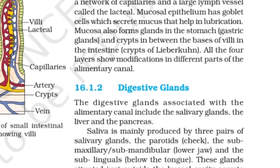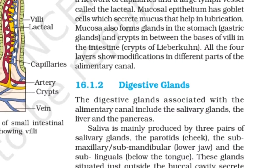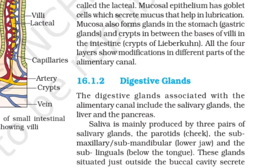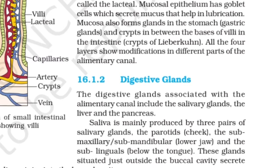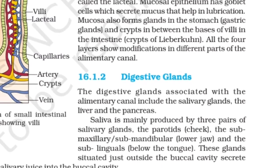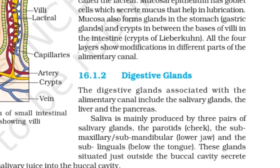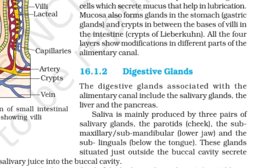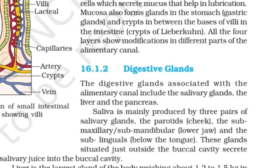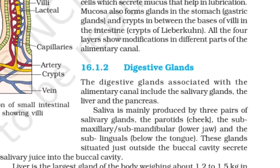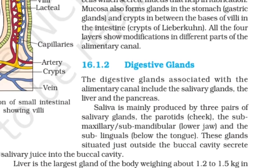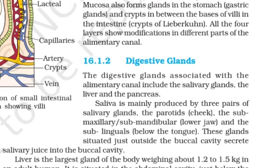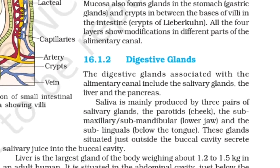Saliva is mainly produced by three parts of salivary glands: the parotids, the submaxillary, submandibular, and the sublinguals. These glands, situated just outside the buccal cavity, secrete salivary juice into the buccal cavity.